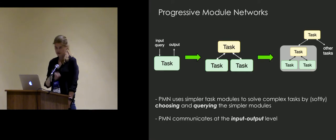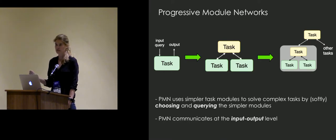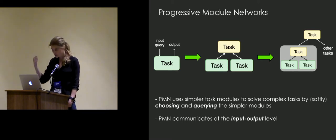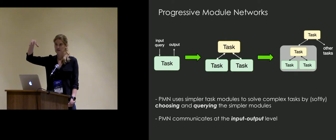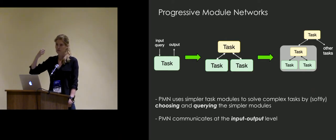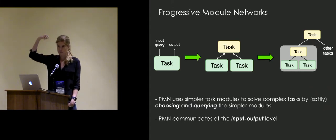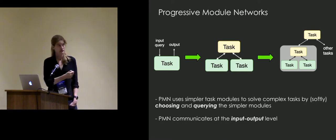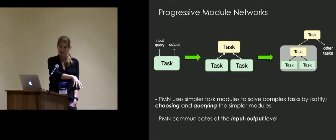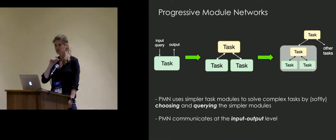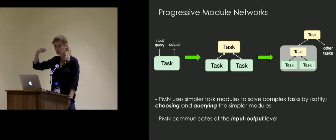In Progressive Module Networks, as we call them, we want to learn tasks at progressively higher levels of complexity. Imagine a very simple task: you have an input — we'll call it a query — and it produces some interpretable output, like object classification. A new compositional task builds on top, learning how to query the simpler task, get its output, and then use that output to do reasoning on top. You can add another task on top that calls the more complex task, which calls the other task, and so on — they communicate at the input-output level.